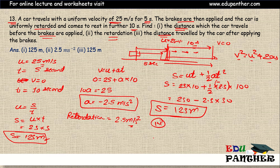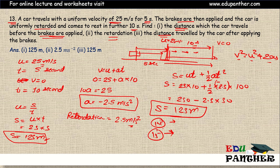The remaining two questions, number 14 and 15, are homework for you to solve on your own. Write down the data, check which formulas are applicable, and solve step by step. If there is any doubt, ask in the comment section. The 9th grade worksheet has been uploaded on the website — you can freely download and practice it. In the next session, we will solve numericals of the next chapter, Laws of Motion. Thank you.